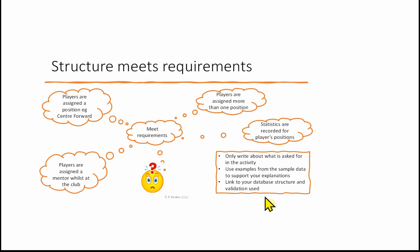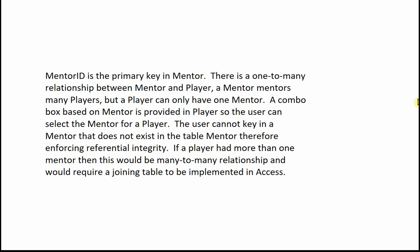Here is a sample paragraph about mentors. Mentor ID is the primary key for mentor. There is a one-to-many relationship between mentor and player — a mentor mentors many players, but a player can only have one mentor. A combo box based on mentor is provided in player so the user can select a mentor. The user cannot key in a mentor that does not exist in the mentor table, therefore enforcing referential integrity.